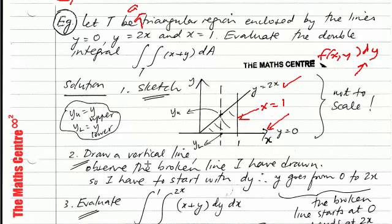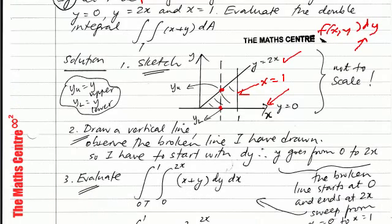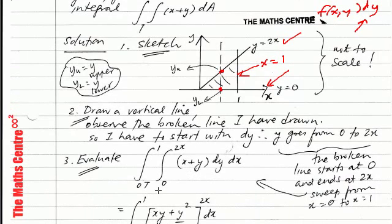In step 2, draw a vertical line — I've used a broken line so as not to clutter up the picture. Once you have drawn this vertical line, look for the smallest value of y — that is y lower — and the largest value — y upper. The lower value of y will be 0, and the upper value of y will be 2x. So you can plug in your y limits: y goes from 0 to 2x.